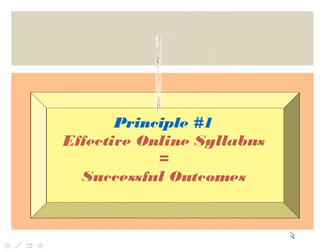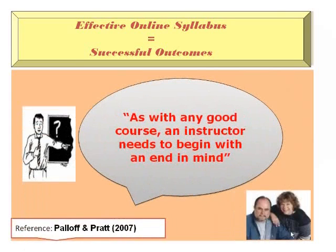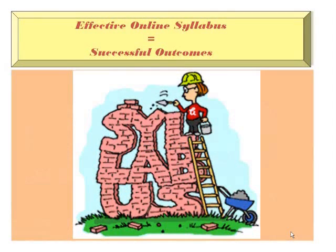Principle 3: Effective Online Syllabus Equals Successful Outcomes. According to Paloff and Pratt, as with any course, the instructor must begin with the end in mind. That is, there must be well-defined outcomes and objectives, the course must contain appropriate reading materials, the course outline must be topic-driven, and assessment activities must be developed and aligned with outcomes and objectives.